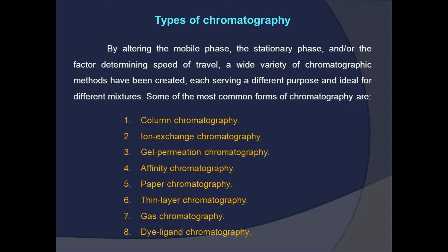There are different types of chromatography. By altering the mobile phase, the stationary phase, and the factor determining the speed of travel, a wide variety of chromatographic methods have been created, each serving a different purpose and ideal for different mixtures. Some of the most common forms are column, ion exchange, gel permeation, affinity, paper, thin layer, gas, and diligent chromatography.